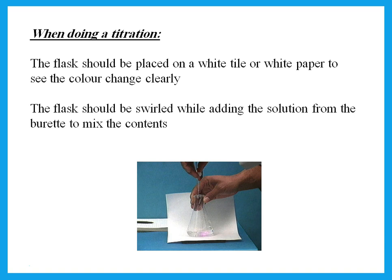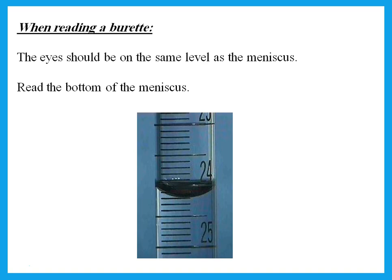You should know that during titration, the flask should be placed on a white tile or white paper — to see the color change clearly, so you can see exactly when yellow turns to orange. The flask should be swirled while adding the solution from the burette in order to mix the contents. When reading a burette, the eyes should be on the same level as the meniscus — the round top of the liquid — and we read the bottom of the meniscus.